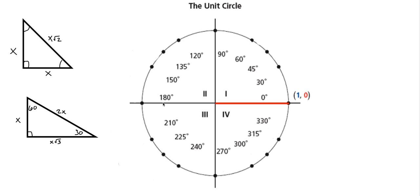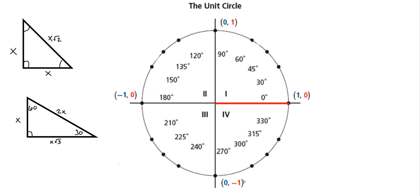If we go 1 unit to the left, that gives us the point (-1, 0). Going 1 unit straight up gives us (0, 1), and going 1 unit straight down gives us (0, -1). So those four points around the circumference are pretty easy.